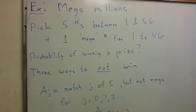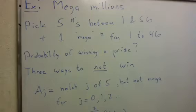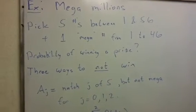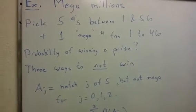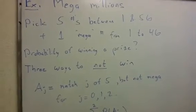And those are defined by the following events. So if A sub j is the event that we match j of 5 but not the Mega, then we're going to not win if A sub j occurs for j equals 0, 1, or 2. In other words, if we match two or fewer of our five numbers and not the Mega, then we're not going to win anything.